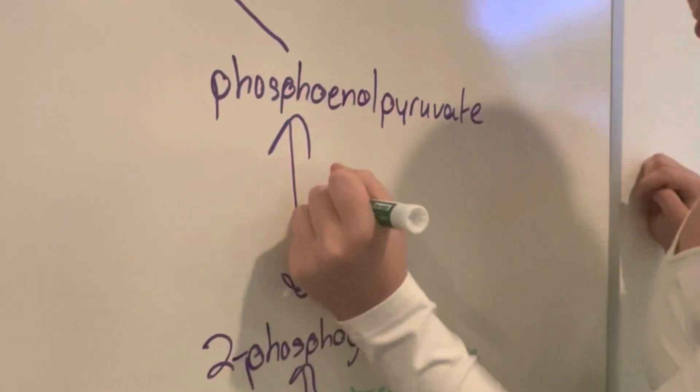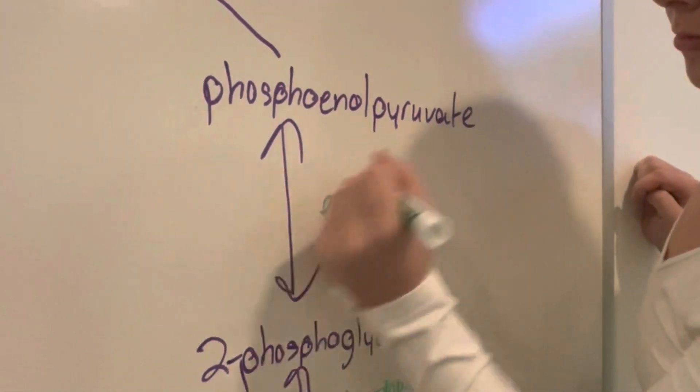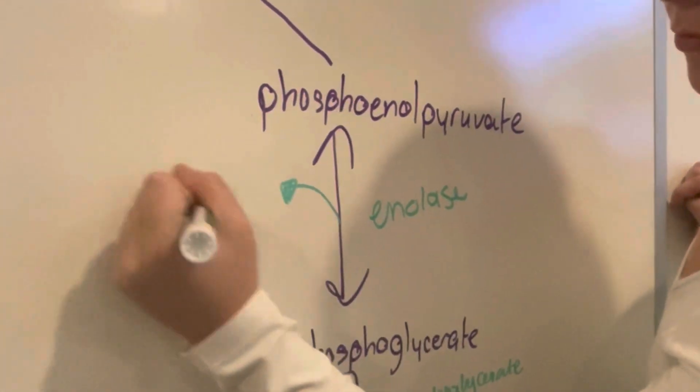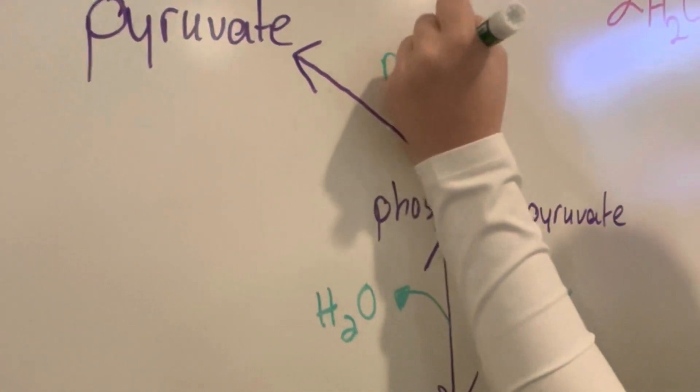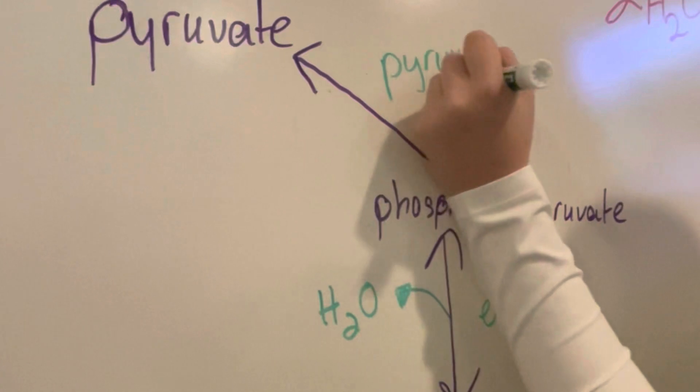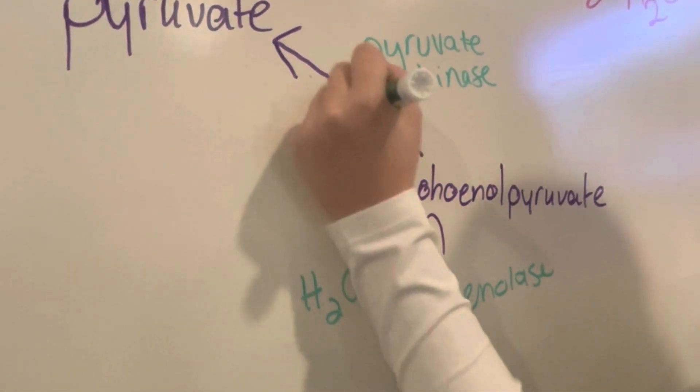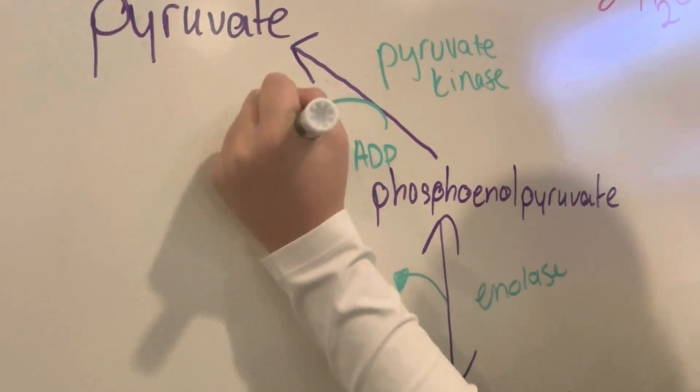Then the next one is catalyzed by enolase with the additional product of H2O. The last one is catalyzed by pyruvate kinase. It also has the addition of ADP to turn into ATP.